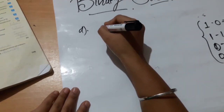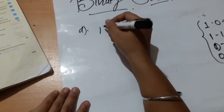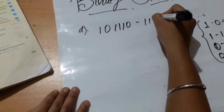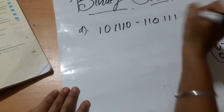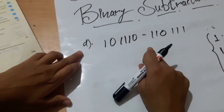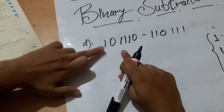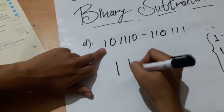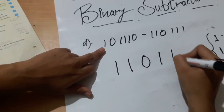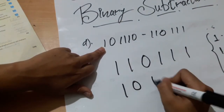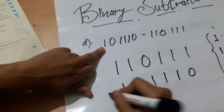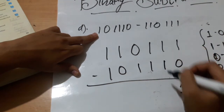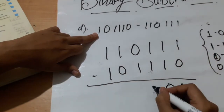Next question: 101110 minus 110111. First we check which number is greater. Since 101110 starts with 10 and 110111 starts with 11, we write 110111 as the greater number on top. We start our subtraction: 1 minus 0 is 1, 1 minus 1 is 0, 1 minus 1 is 0. Now a tricky case arises.